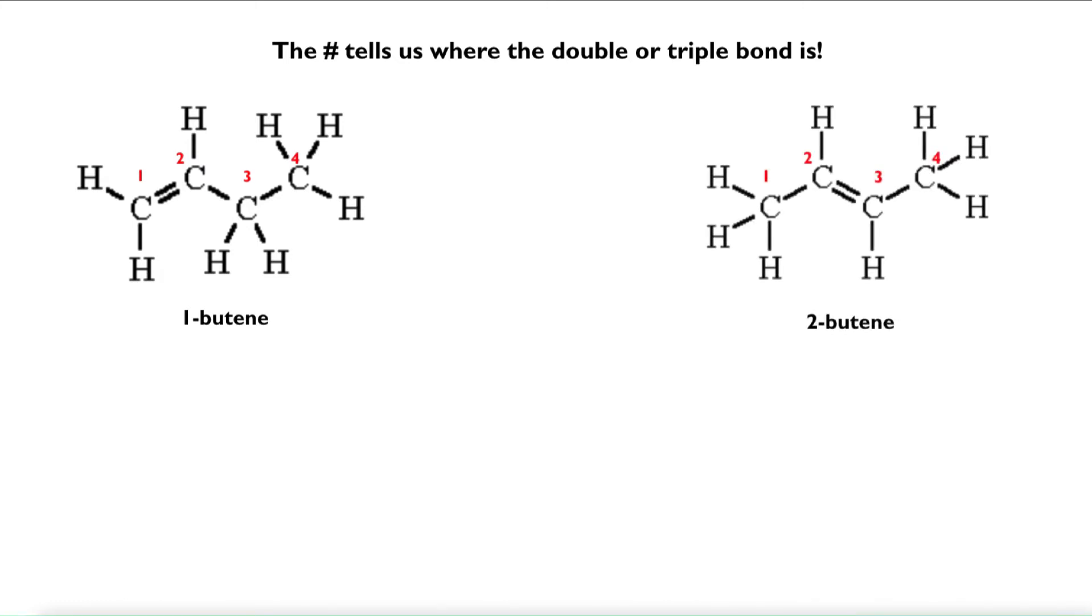This is different from this example, 2-butene, which is essentially the same, but now the double bond is between the second and the third carbon. So those numbers are just telling you the location of the double bond or the triple bond. So here is 1-butyne. This is butyne and not butene because there is a triple bond between the first and the second carbon instead of a double bond, and it's 1-butyne because the triple bond is between carbons one and two. Here's 2-butyne, where the triple bond is between the second and third carbons.